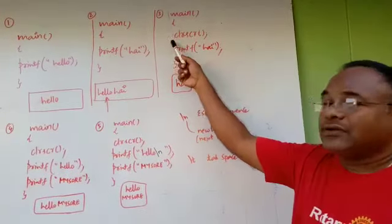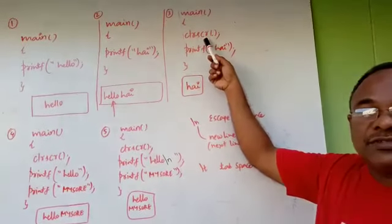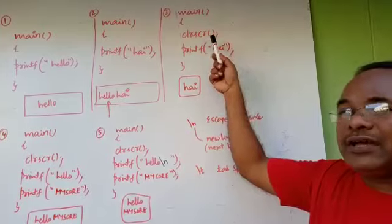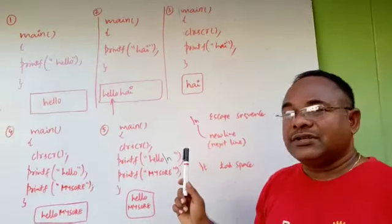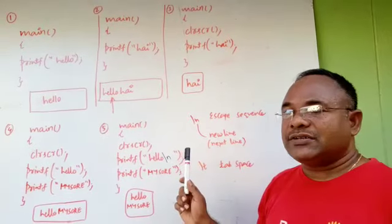Look at 3. And here we used a function CLR SCR. CLR SCR, clear screen. Don't use capital letters in main, printf, CLR SCR.